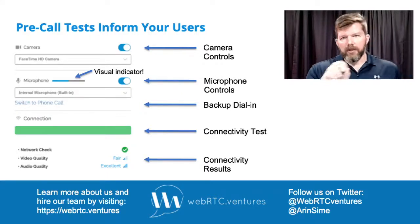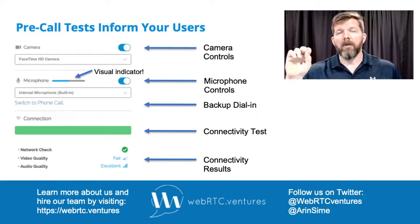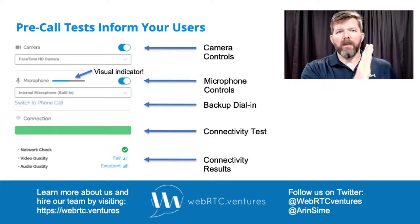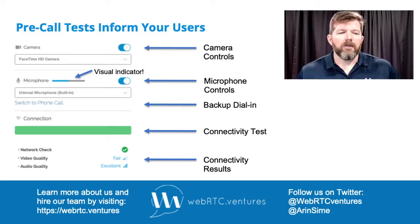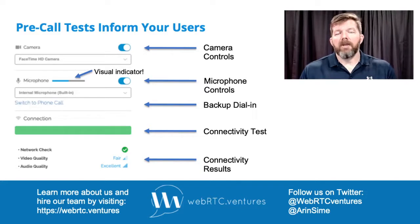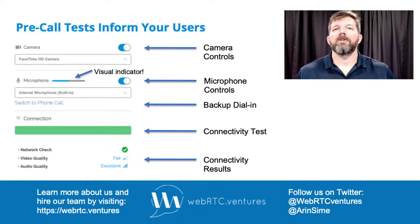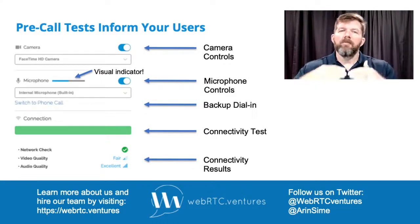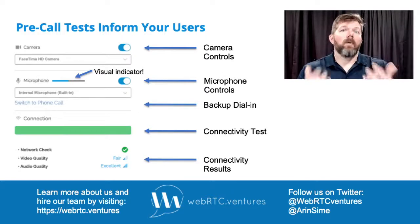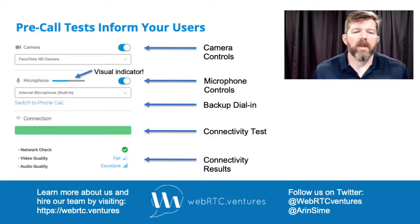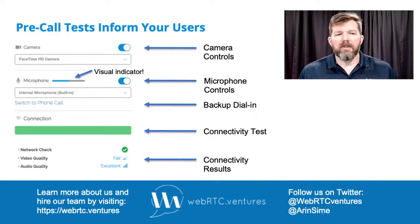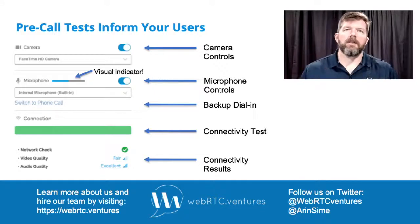And then there's a connectivity test. In this screenshot the connectivity test has been completed, shown as a completed green bar, but when you're looking at that screen it moves like a progress bar as the test runs. The color can also indicate whether the connectivity test was successful or not. This application's pre-call test is built on top of Vonage Video, so we're doing an actual network test to make sure we can reach Vonage's media servers and that there are no network restrictions. We then display to the user whether the network check was successful, and whether the video quality is fair or the audio quality is excellent.